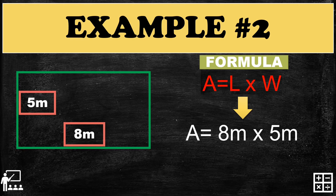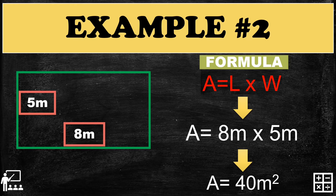We multiply eight by five, which gives us forty. So the area of this rectangle is A equals forty meters squared.